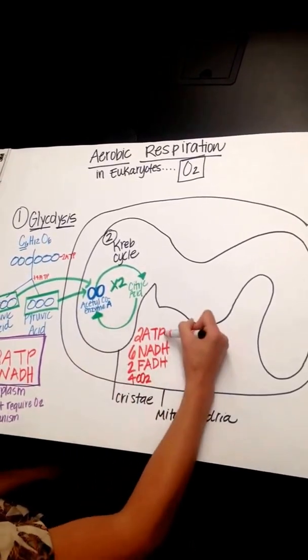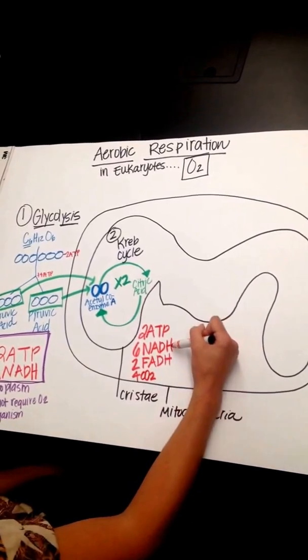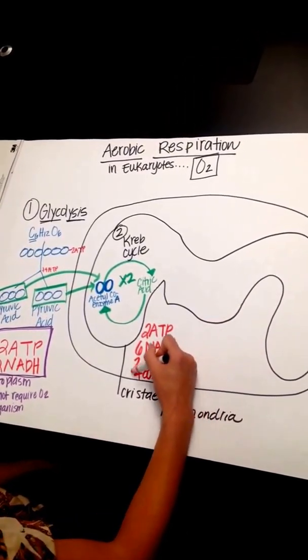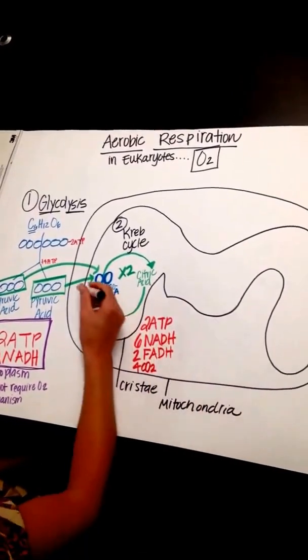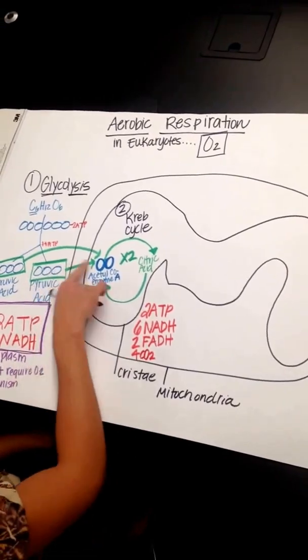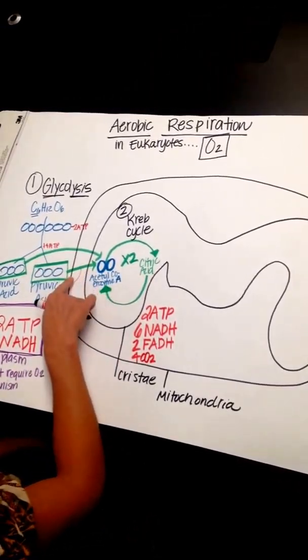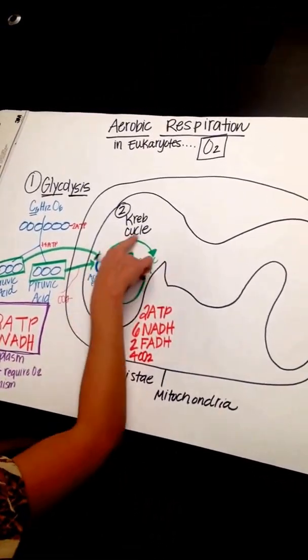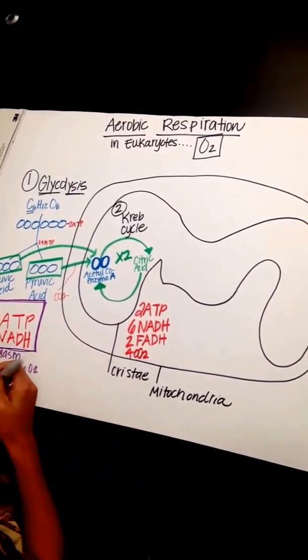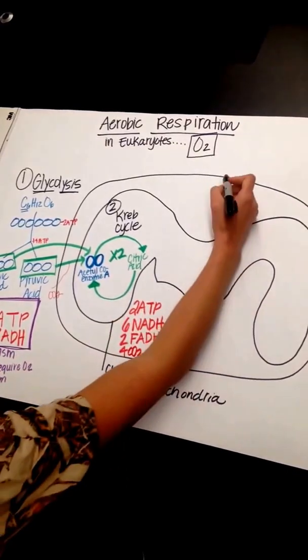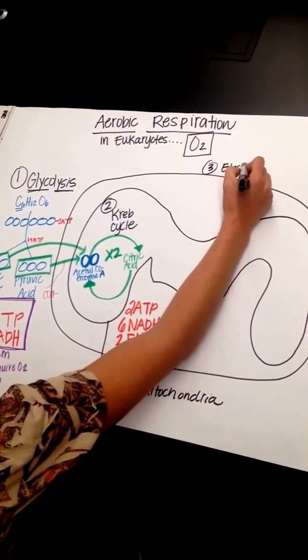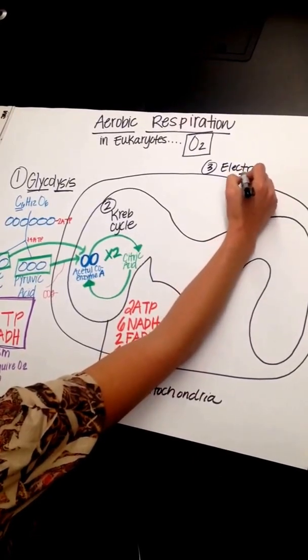So we've made two ATP, which is not very much. But we've made these electron molecules that are important. And the CO2. This is the CO2 that you exhale. You also lost the CO2 right here. From the pyruvate to acetyl-CoA. This step is called the pyruvate conversion. This is called the Krebs cycle. Next step, which is the most important, I think, is called the electron, step three. Electron transport chain.